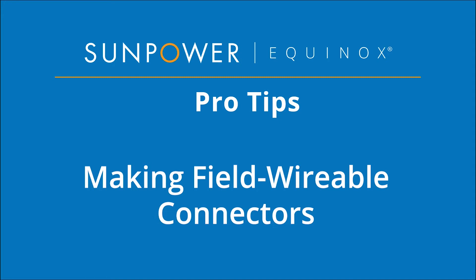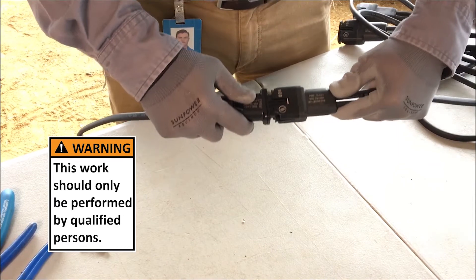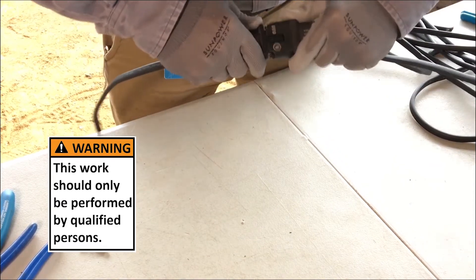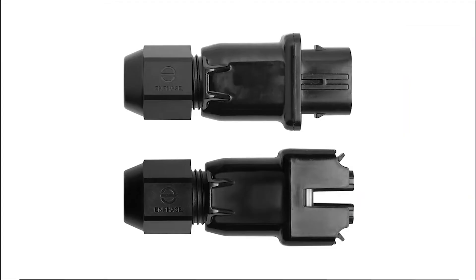Welcome to SunPower Equinox Pro Tips: Making Field Wirable Connectors. This video will demonstrate how to properly make a field connector at a site for any open connector or center feeding any section of cable within branch limits. You can do this with female or male connector types.